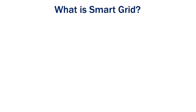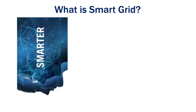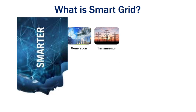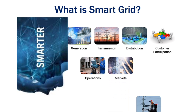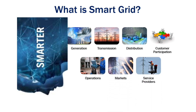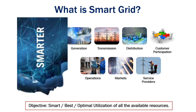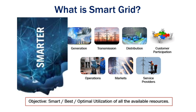What is smart grid? Smart grid refers to smarter generation, smarter transmission, smarter distribution, smarter customer participation, smarter operations, smarter markets, and smarter service providers. The overall objective of smart grid is to have optimal utilization of all the available resources in the power and energy infrastructure.